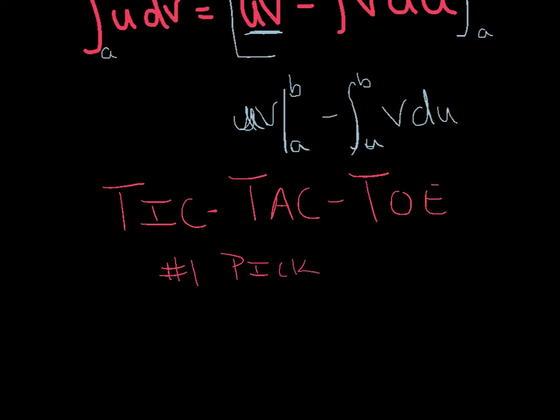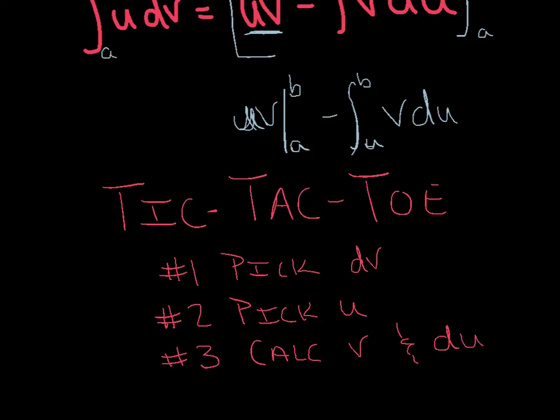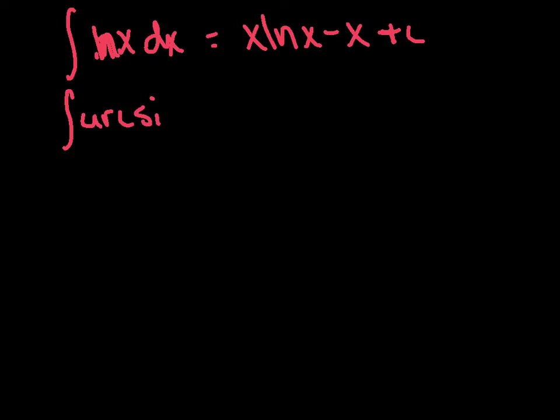Step number one is to pick your dv. We said we want it to be the ugliest part that is still easily integrable. And then you can also pick your u. Step three is to calculate your v by integrating dv, and then you'll have to calculate du by deriving your u. Then we can make the appropriate substitutions and finish it out. Real quick, there's one there that we've done a pretty good job of memorizing. That's the integral of the natural log of x. We ended up with x ln(x) minus x plus c.